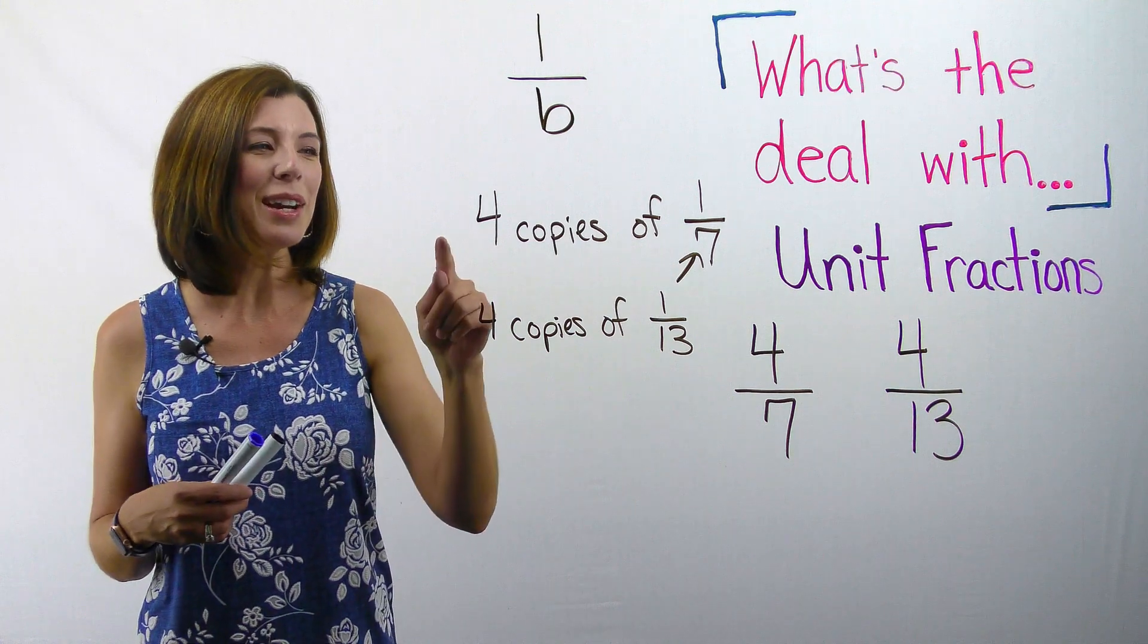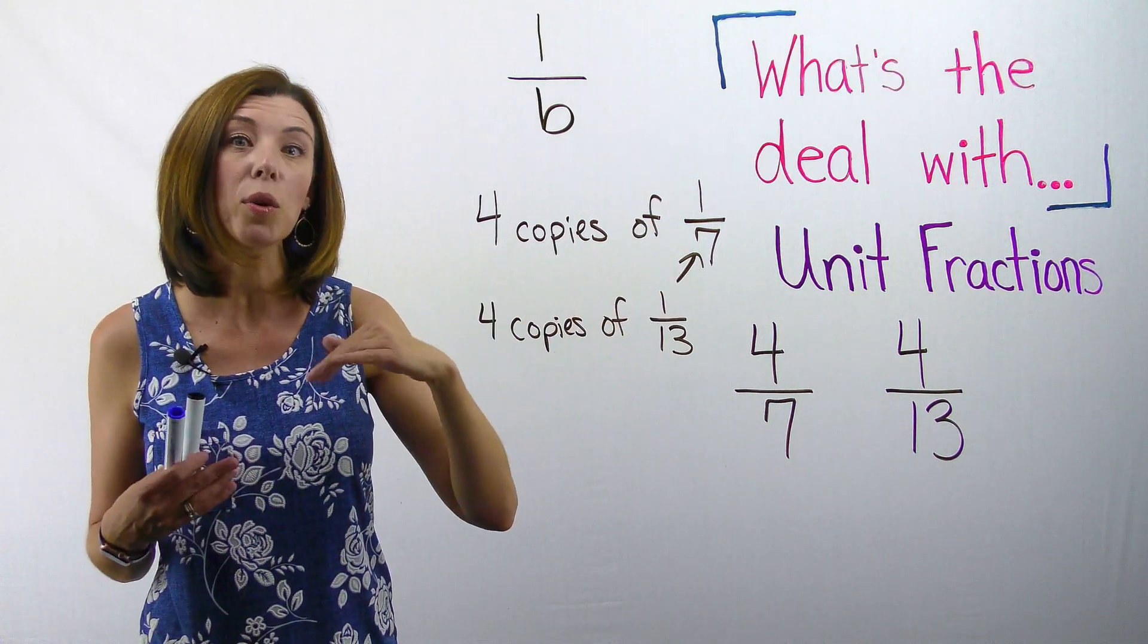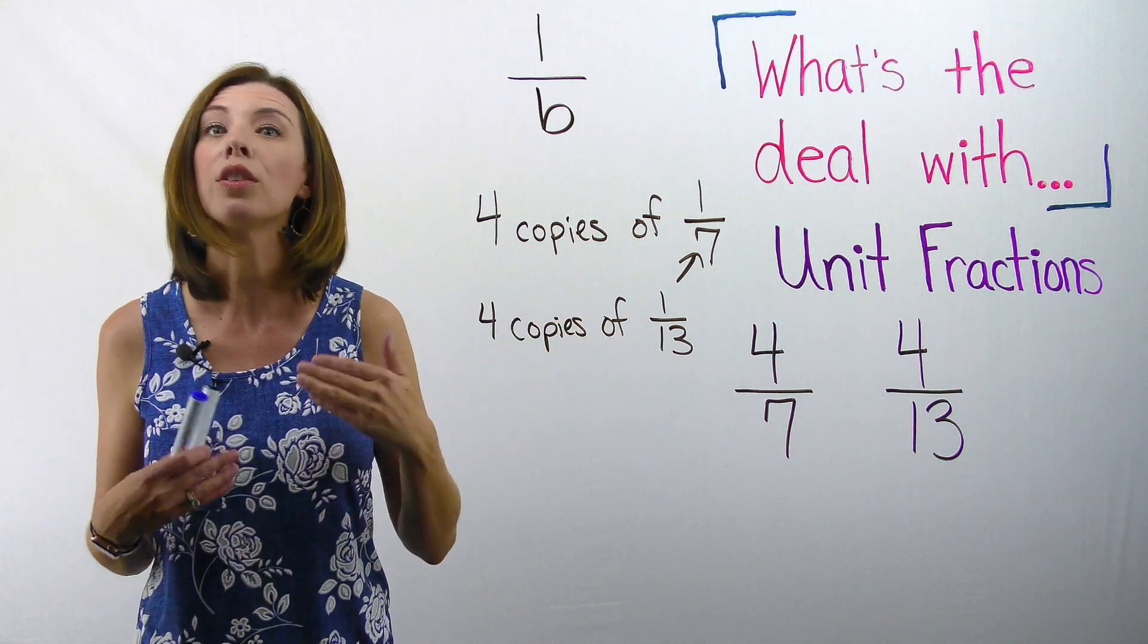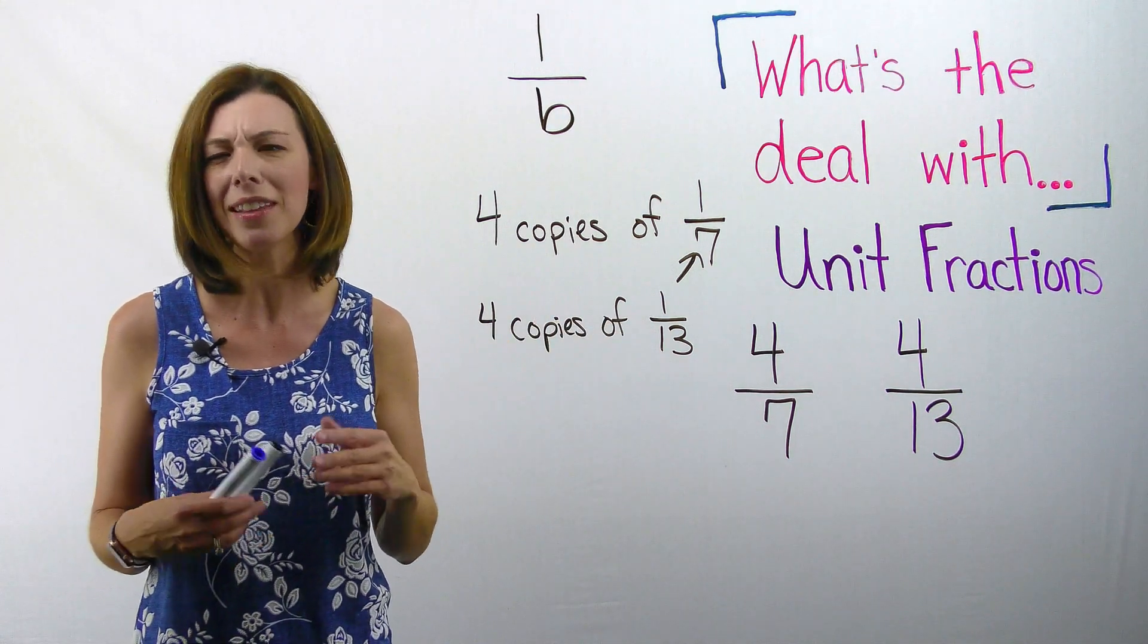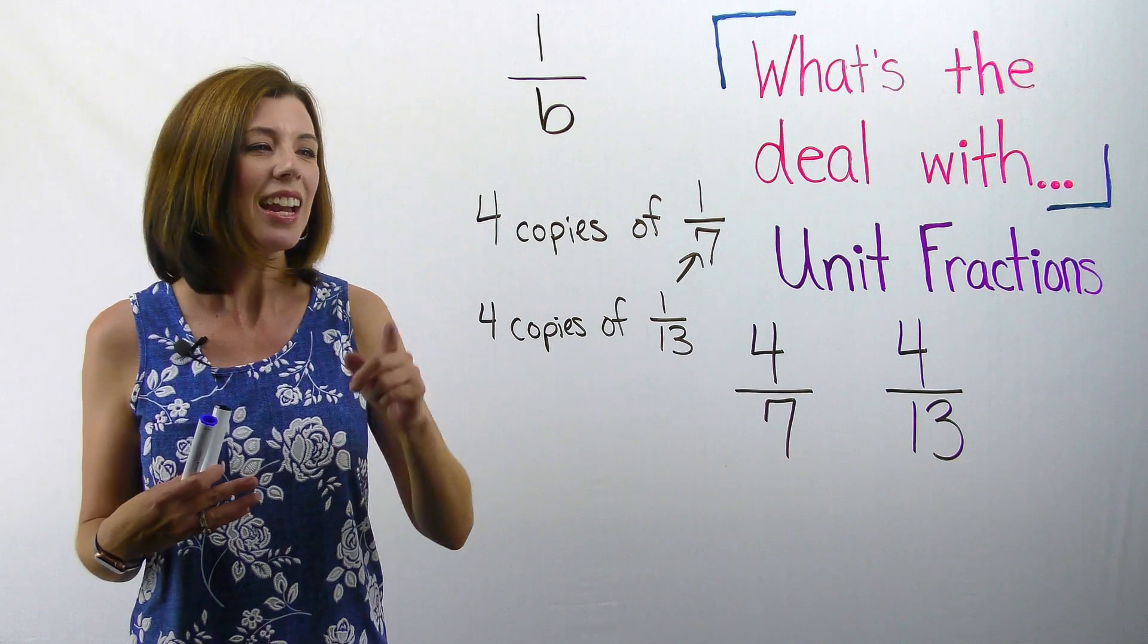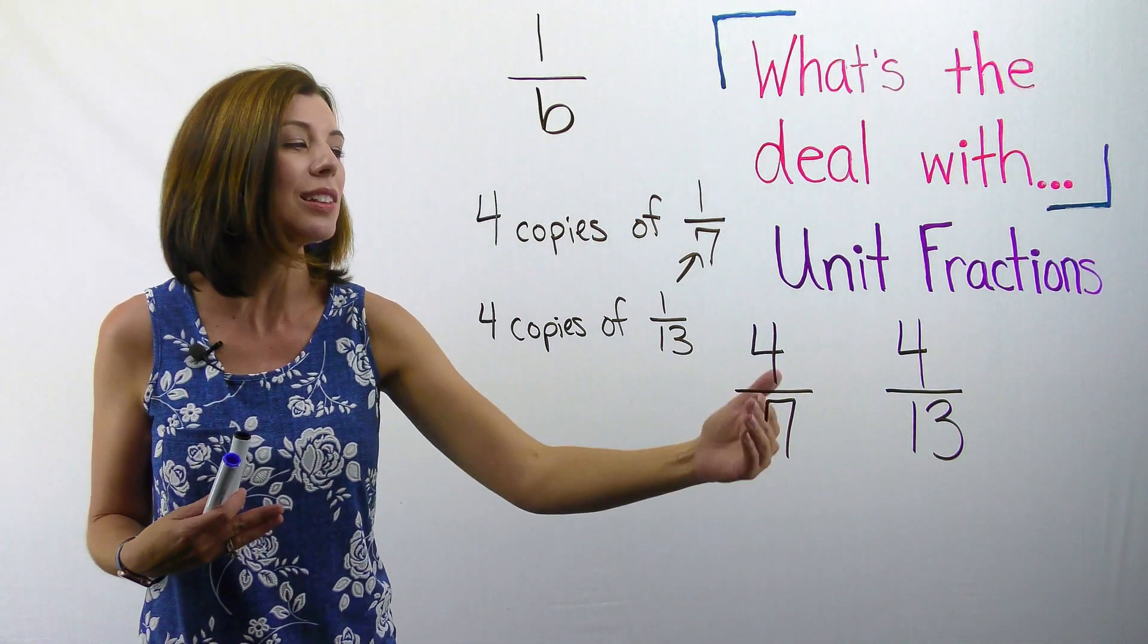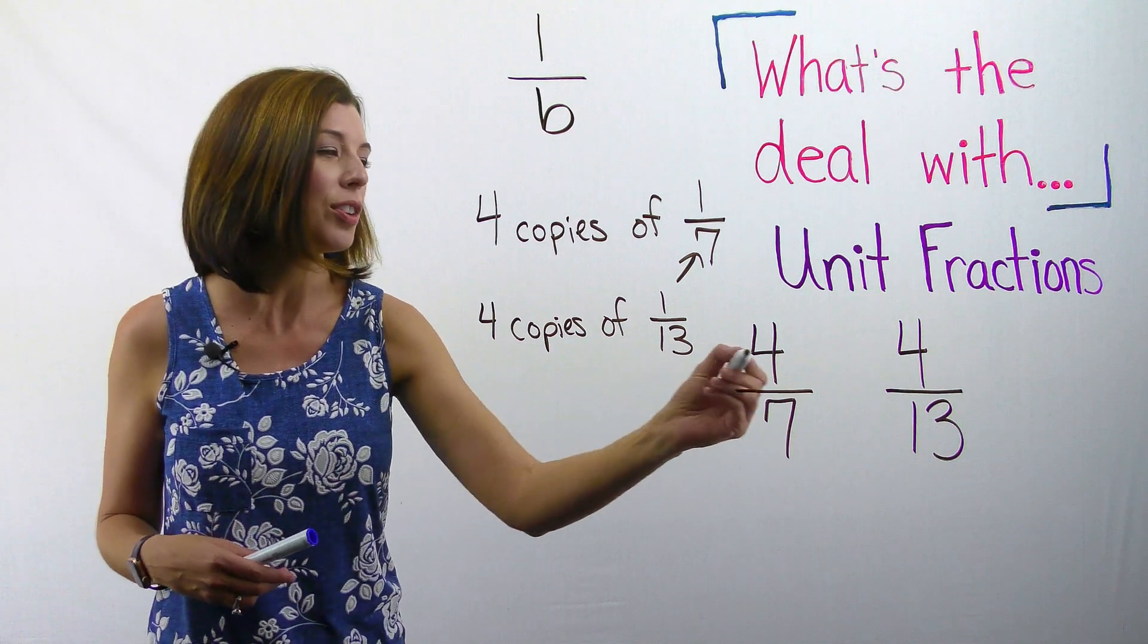So when I'm thinking of four copies of one seventh or four slices of one seventh versus four copies of one thirteenth or four slices of one thirteenth, I can easily see that this four copies of one seventh or four sevenths is going to be larger than that four thirteenths.